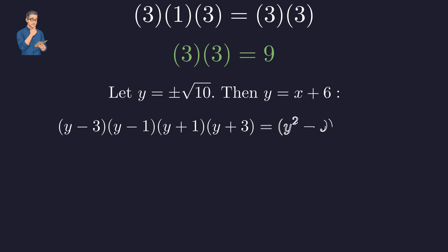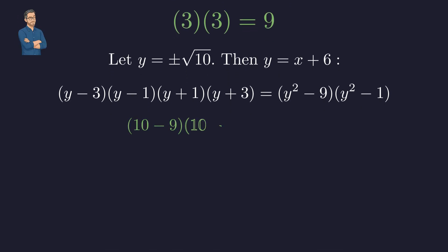The expression becomes (y - 3)(y - 1)(y + 1)(y + 3), which factors as (y² - 9)(y² - 1). Since y² = 10, we get (10 - 9)(10 - 1), which equals 1 × 9 = 9.